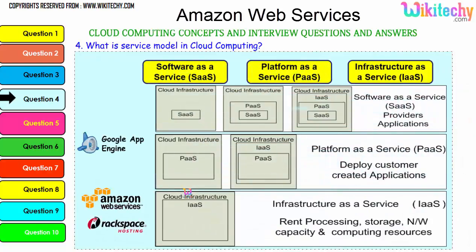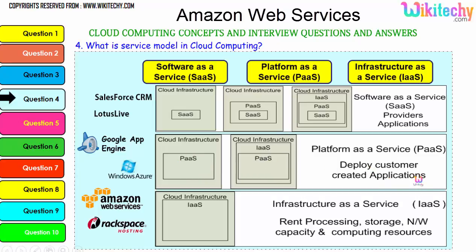Further explaining the models: Software as a Service has cloud infrastructure software placed in the operating system placed in the infrastructure. For Platform as a Service, the OS is given on a server — you can put any application or software you want. For Infrastructure as a Service, a server is given to you and you can choose whatever OS and applications you want to install.